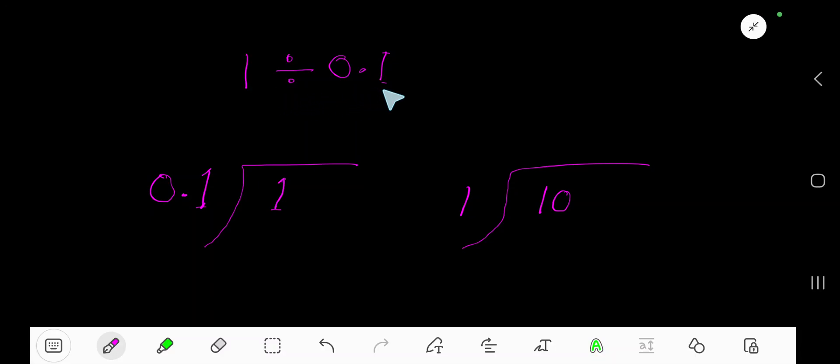1 divided by 0.1. This 0.1 is the divisor and 1 is the dividend. Since the divisor is a decimal, we need to convert the dividend into a decimal. Add a decimal point and zeros. Since the divisor has one digit after the decimal, we will take one zero.